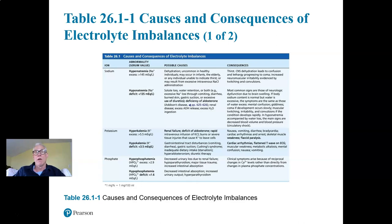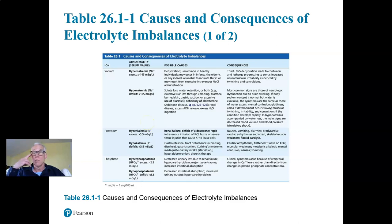Hypokalemia can result from vomiting, GI problems preventing potassium absorption, Cushing syndrome, malnutrition, or hyperaldosteronism. We're going to have problems because potassium will eventually begin leaching out of the cells as extracellular fluid levels go down. We need that big gradient from intracellular to extracellular potassium for resting membrane potential and for repolarizing cells after action potentials. Losing intracellular potassium concentration over time can cause all kinds of problems, including the heart may stop beating.